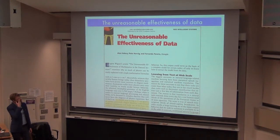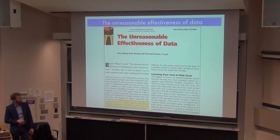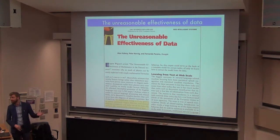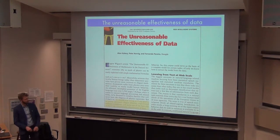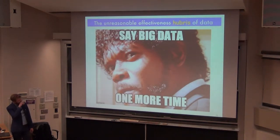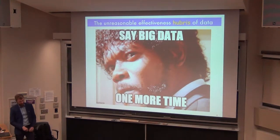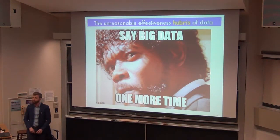Fifty years later, this paper came out by Peter Norvig and collaborators — one of the machine learning people at Google — making the statement that we should stop acting as if our goal is to author extremely elegant theories and instead embrace complexity and make use of the best ally we have: the unreasonable effectiveness of data. I don't completely agree — I don't think we should be abandoning theory, but I absolutely agree we should be embracing data.